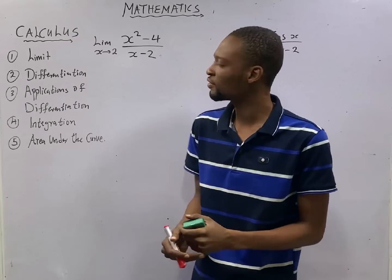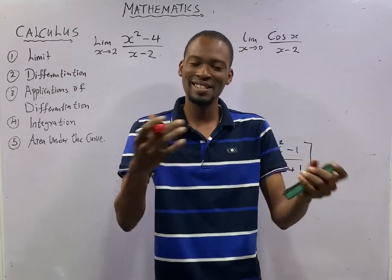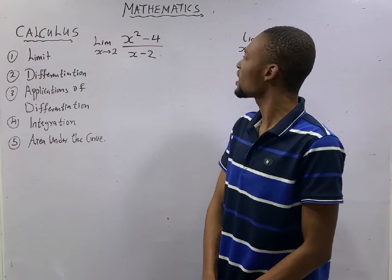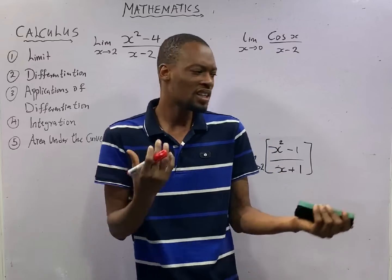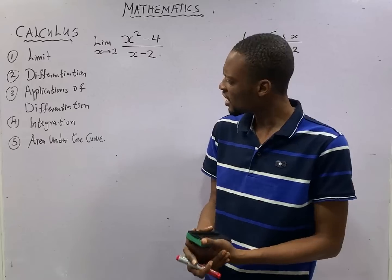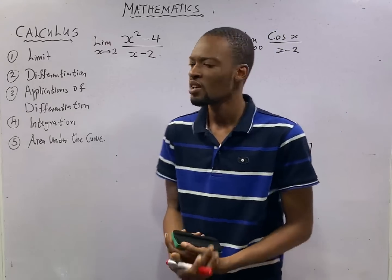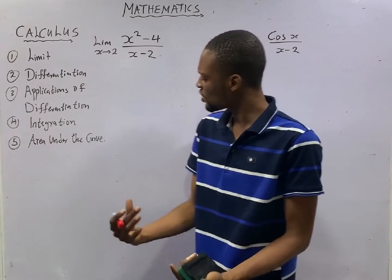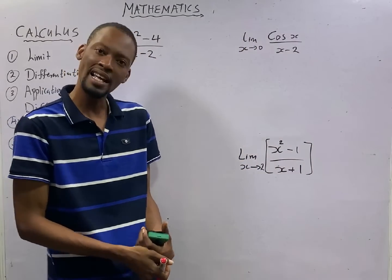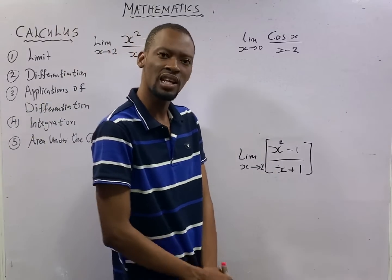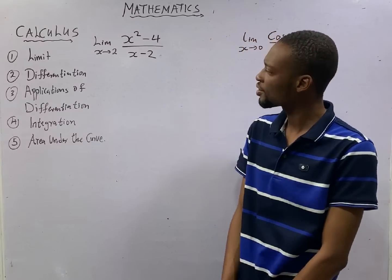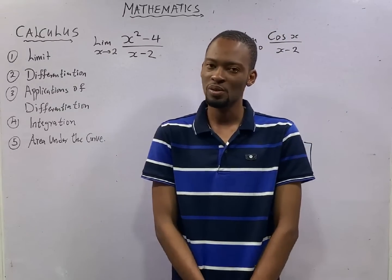This is episode number 87 of the 120 Days to JAMB Mathematics with Flash Isaac. In this episode, we shall be looking at about 3 questions under limits of a function, representing the various ways JAMB sets questions under limits. In the previous episode, we solved a complex question under limits, one of the most difficult questions JAMB can set. If you are able to answer that and you understand these 3 other questions, then you are good to go when it comes to limits.